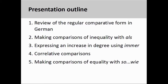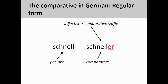As in other videos in the series, examples in English will preface our discussion of German grammar topics as a means of quickly developing background knowledge. The comparative form is constructed by adding the comparative suffix '-er' to the positive form of an adjective or adverb.